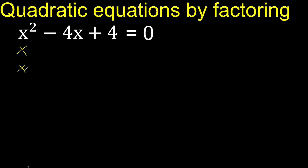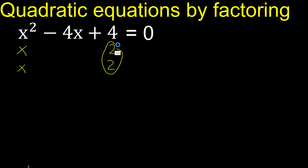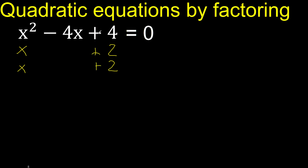x, because x multiplied by x is x squared. We need 2 numbers that multiply to give 4: 2 multiplied by 2 is 4, or 4 multiplied by 1 is 4. Using sign rules: plus times plus is plus, or minus times minus is plus.